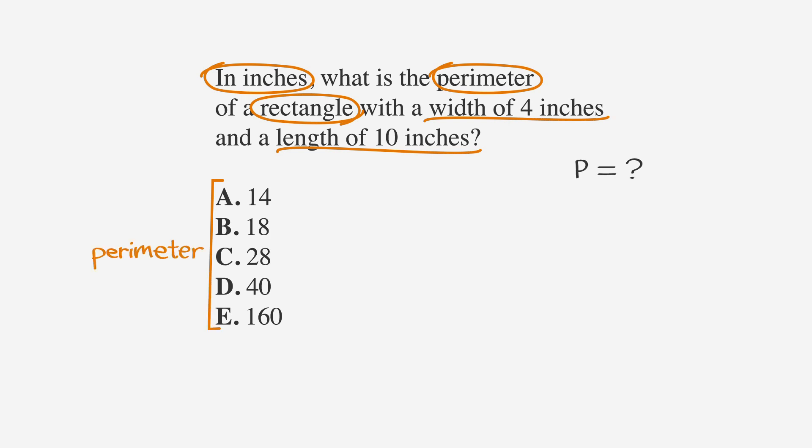From the question, we know that we're creating a rectangle. Let's draw one. Then, we want to label it. We know that the width of our rectangle is 4 inches and the length is 10 inches. Remember, the formula for the perimeter of a rectangle is the sum of all sides.